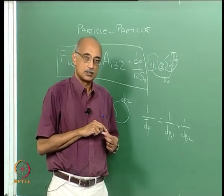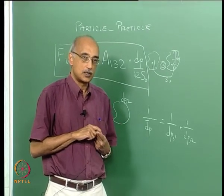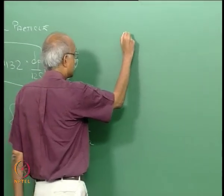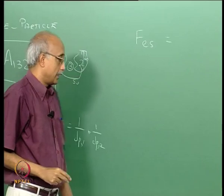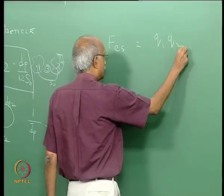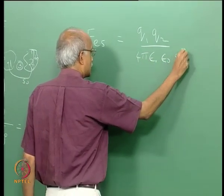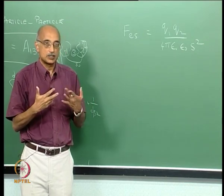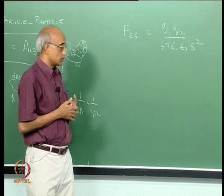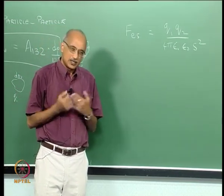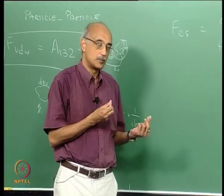Similarly, for electrostatic forces, if you have two particles with charges q₁ and q₂, then the electrostatic force of interaction between them is q₁q₂ / (4πε_r ε₀ s²), where ε_r is the dielectric constant of the medium, ε₀ is the permittivity of free space, and s is the distance of separation between the centers of the two particles. Electrostatic forces between two particles behave very similarly to electrostatic forces between a particle and a surface.